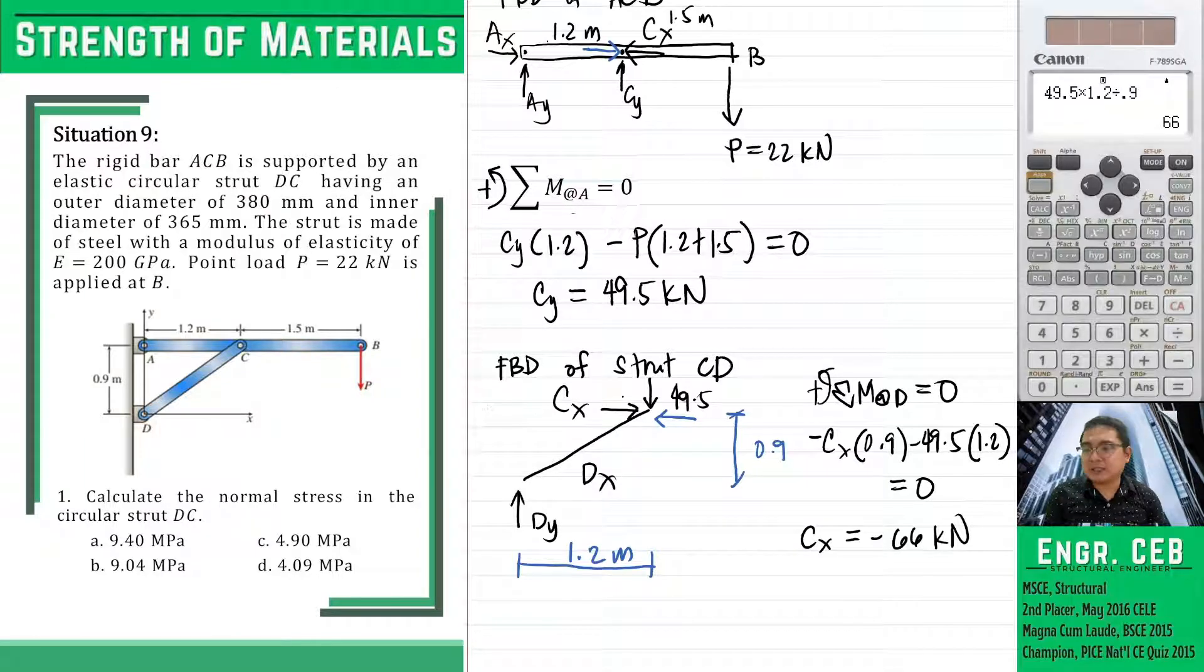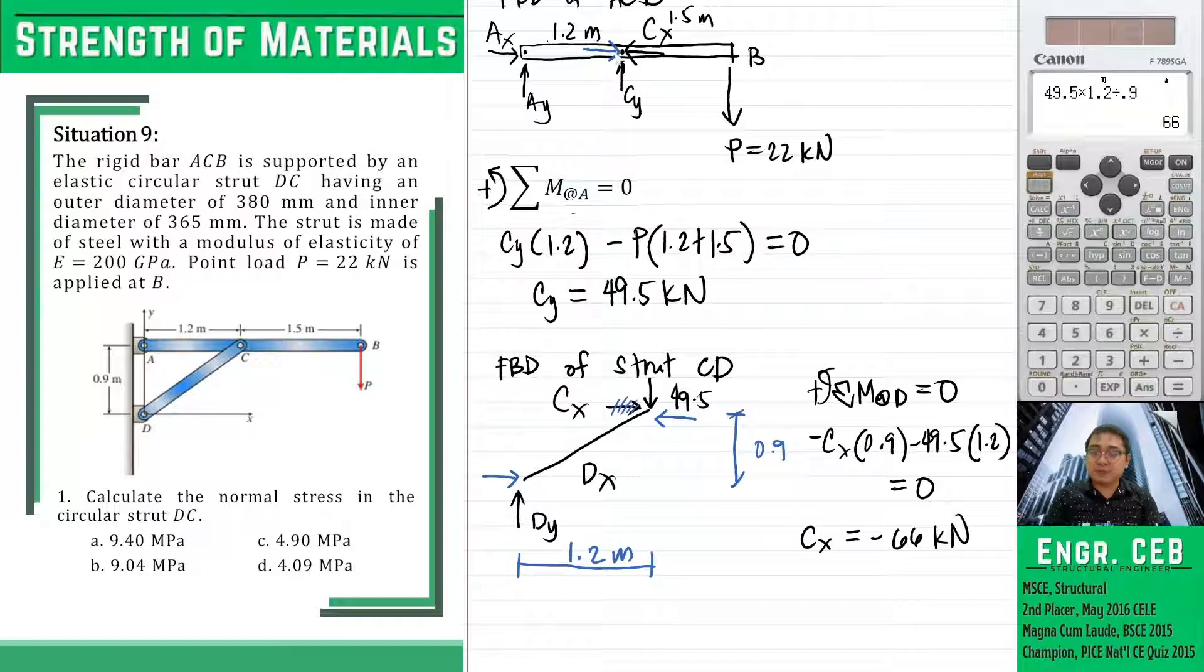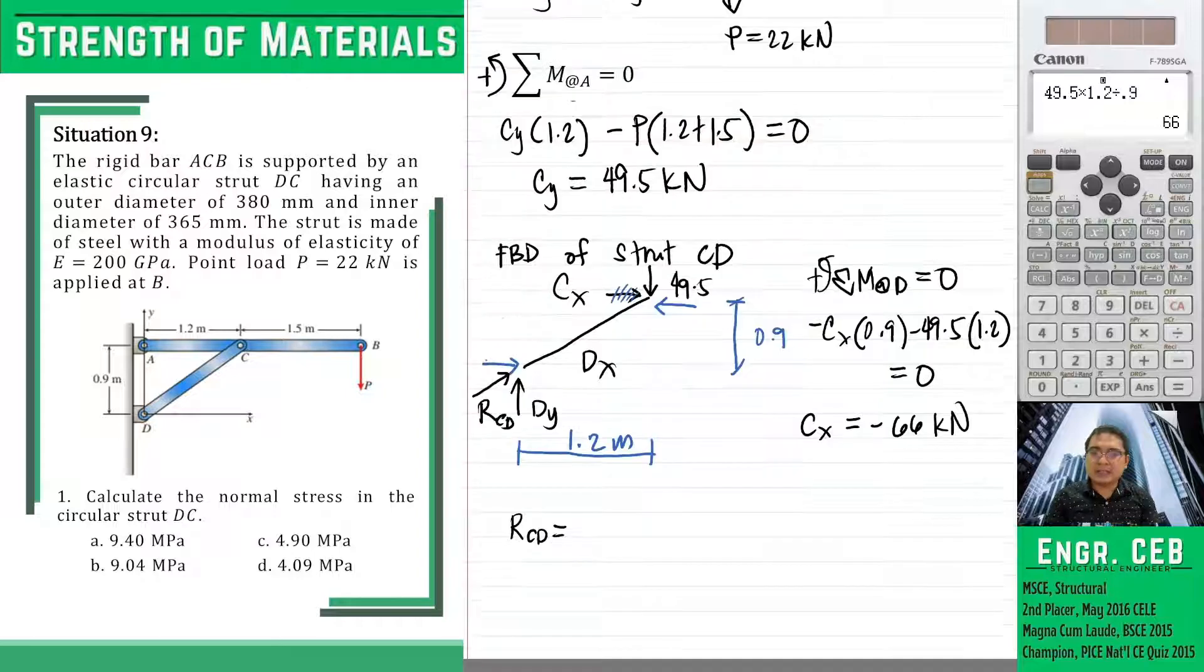Also, that would give us an idea that the corrected direction of DX is also to the right. Notice strut CD is a two-force member. In order to get the normal force acting in strut CD, we need to get the resultant of the force components, either DX and DY or CX and CY.